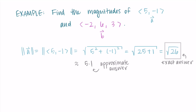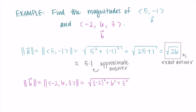Now for vector b = ⟨−2, 6, 3⟩, the magnitude of b equals the square root of (−2)² + 6² + 3², which is the x component squared, y component squared, and z component squared all added together under the square root. That gives the square root of 4 + 36 + 9, which is the square root of 49, which is just 7. So the magnitude of this vector is 7 — it has a length of 7 units.